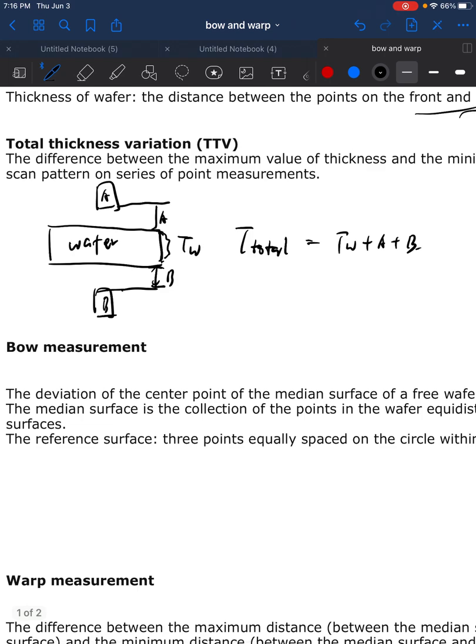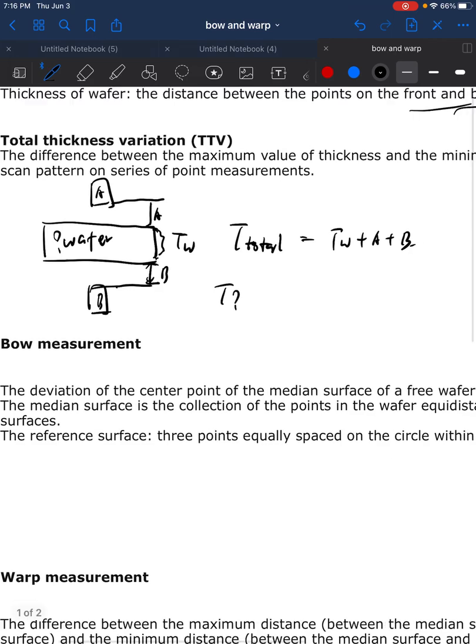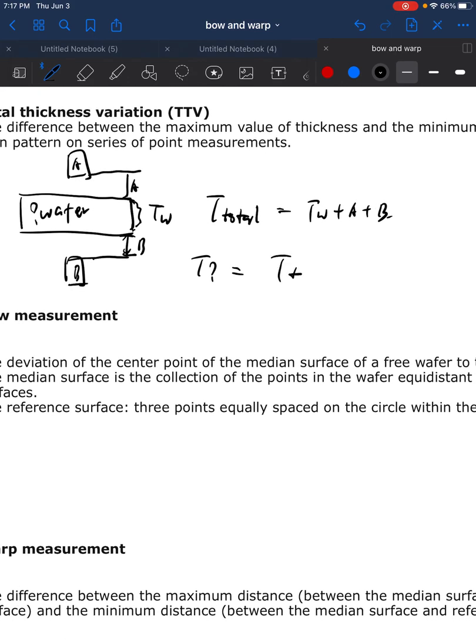Then if we insert a wafer of unknown thickness, we can measure that thickness as T total minus A and minus B.